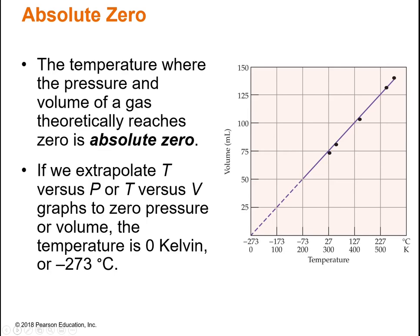When talking about Kelvin, we need to discuss absolute zero. Absolute zero is the temperature at which the pressure and volume of a gas theoretically reach zero. If you were to extrapolate a graph of temperature versus volume back to where the volume is zero, the temperature would be −273°C, or 0 Kelvin.